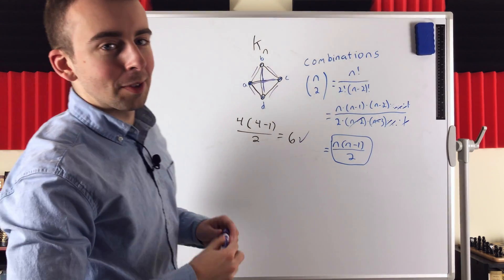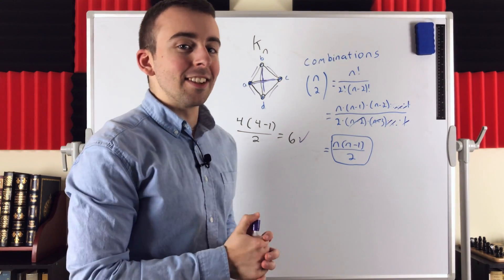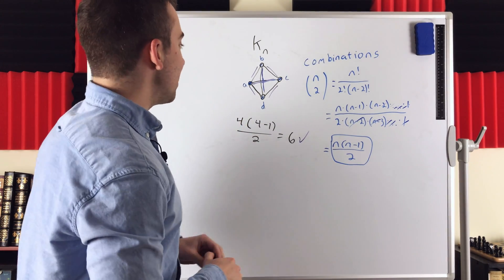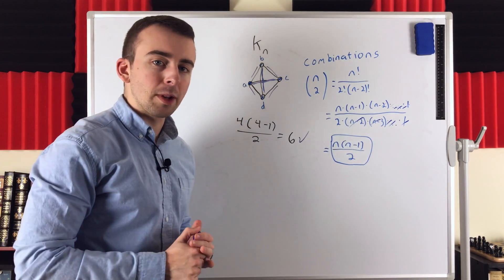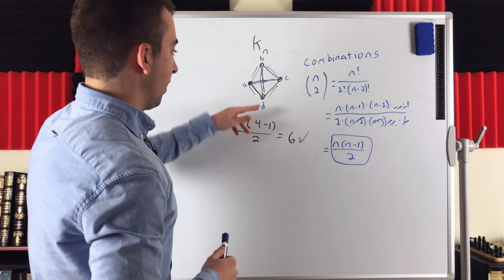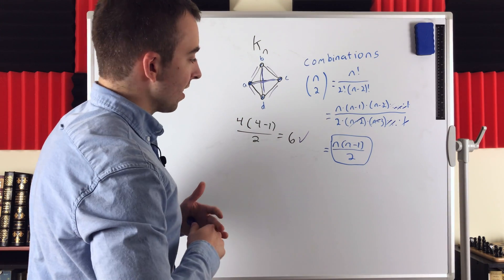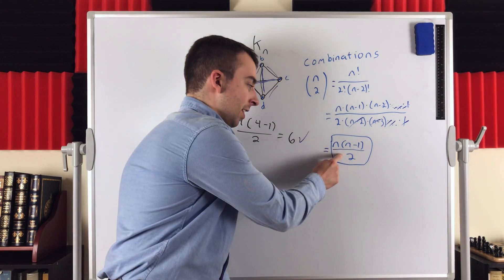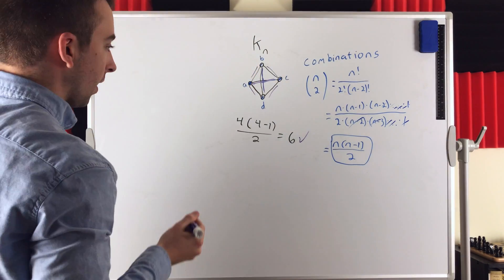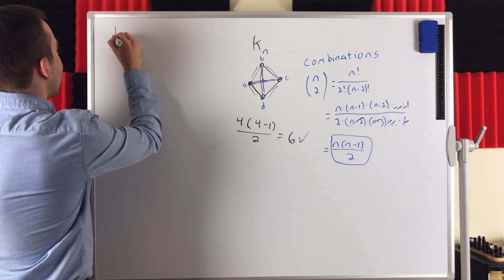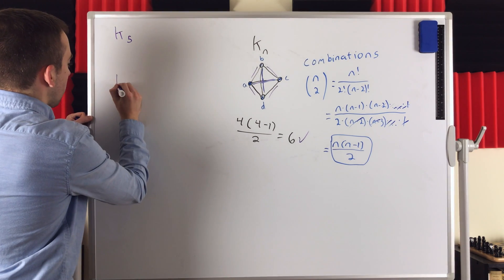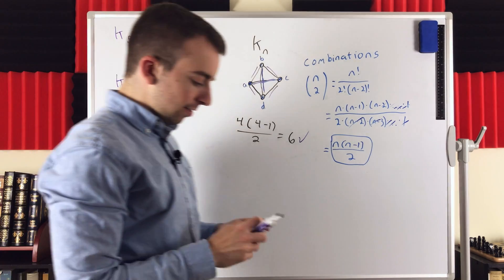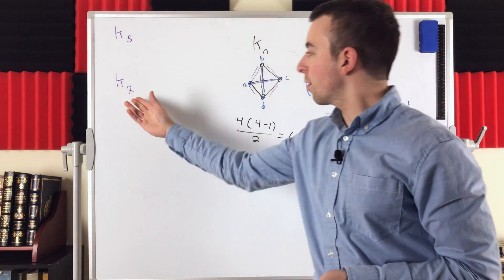Of course, that doesn't prove it, but our general reasoning is the justification for why this works for every complete graph. The other argument we'll use in the next lesson is concerned with the degrees of the vertices, so if you're interested, you could try working that explanation out yourself. Let me give you a couple of problems to try on your own: find the number of edges in the complete graph with 5 vertices and in the complete graph with 7 vertices.